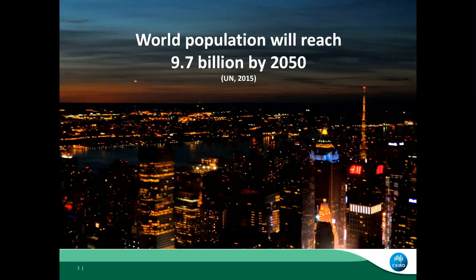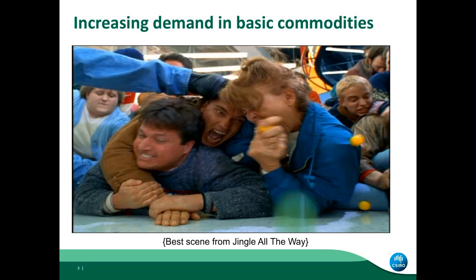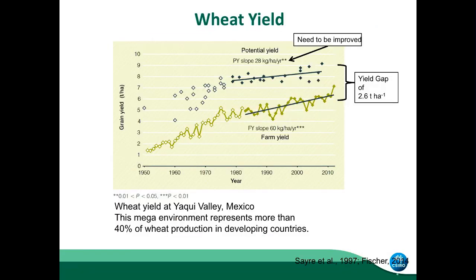The context is that the world population is increasing, so we need to increase the staple crops, because there's a lot of demand of basic commodities. One basic crop is wheat, and the yield of wheat has been increasing. Here in this plot, we have the years and the yield — a plot showing how farm yield is increasing.